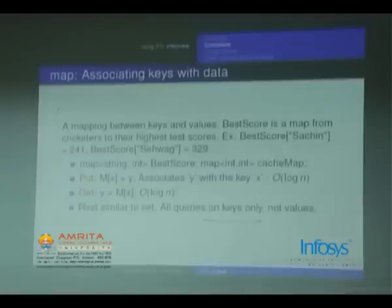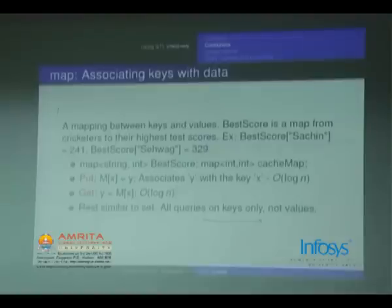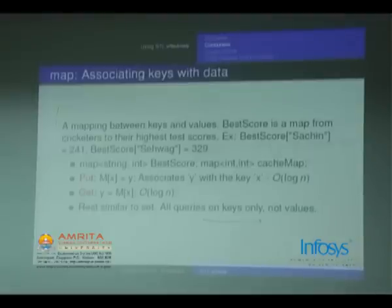Next is map. Map has the same implementation as set — both work on red-black AVL trees. Syntax: map<int, int>. A map is a key-value store. m[x] = y associates y with key x in O(log n) time. Getting y = m[x] also performs in O(log n) time. The rest of the operations are similar to set.